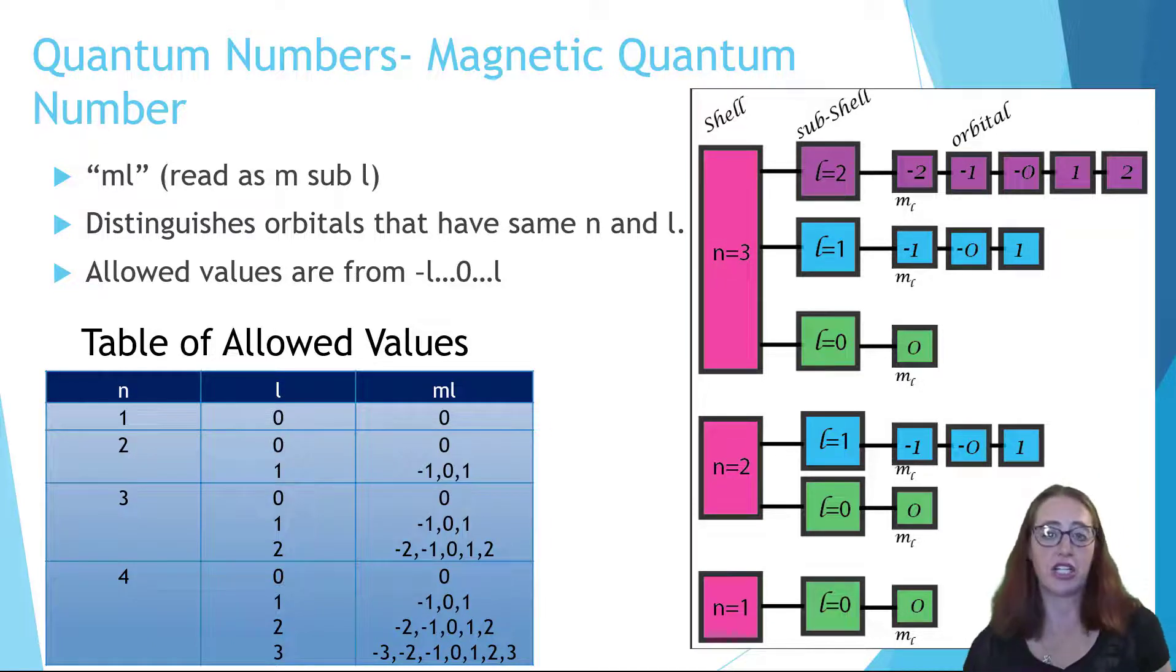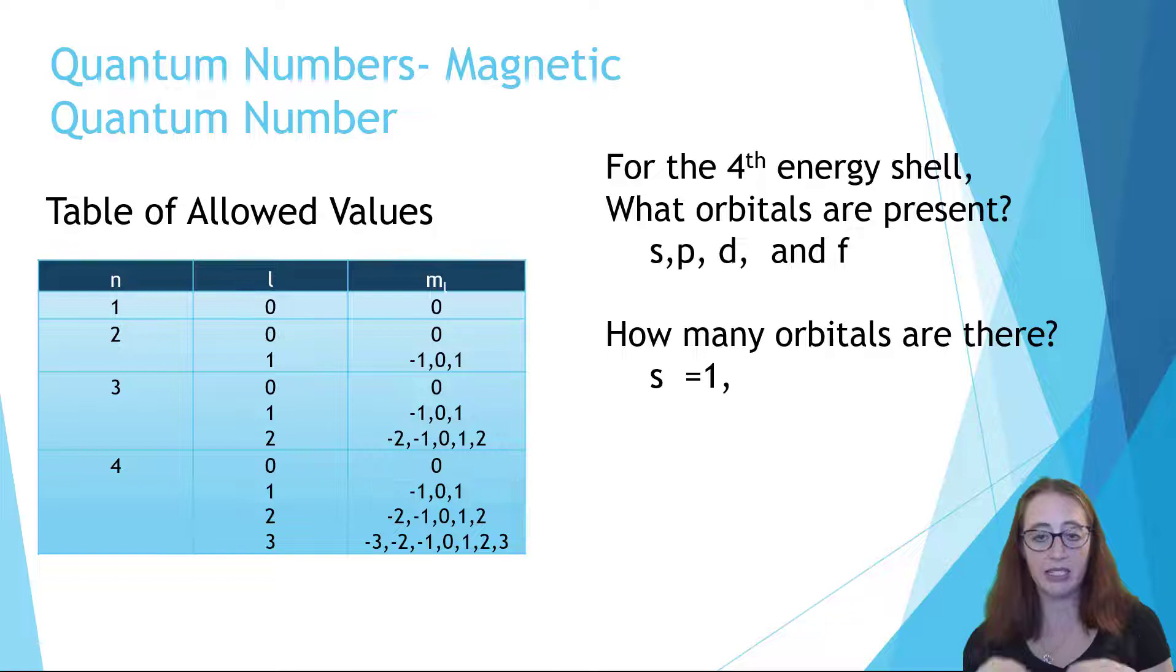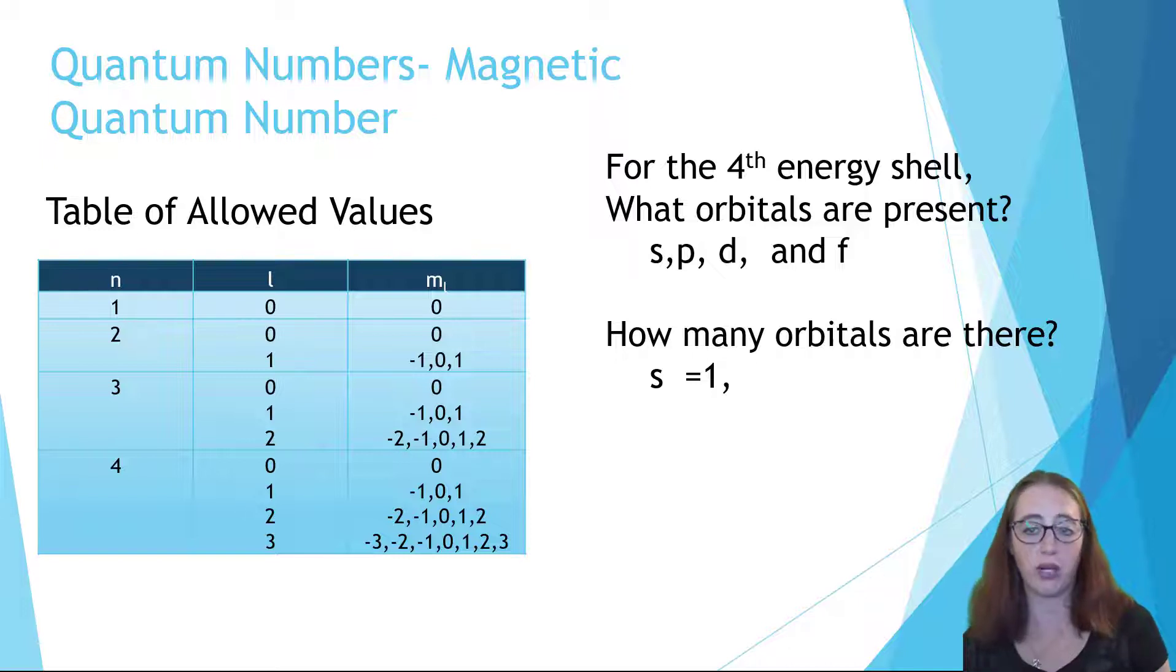Now let's take a look at our question about the fourth energy shell from the last slide and extend it a bit. How many orbitals are there in the fourth energy shell? Since we know that there are s, p, d, and f orbitals, or stated a different way that l is allowed to equal zero, one, two, and three, we can see how many of each orbital exists. When l equals zero, m sub l is only allowed to equal zero. So that means that there's only one s orbital. The zero doesn't mean there's no orbitals. It means that there is an orbital with a value of zero.